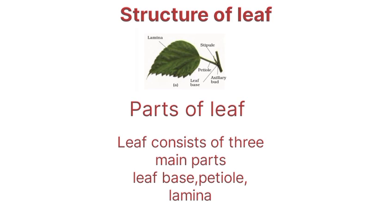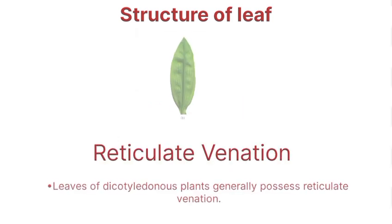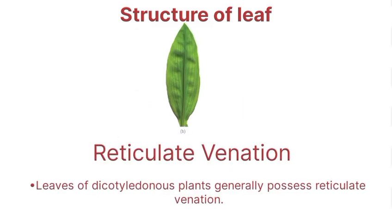The three main parts of a leaf are: leaf base, petiole, and lamina. Leaves may have reticulate venation; leaves of dicotyledonous plants generally possess reticulate venation.